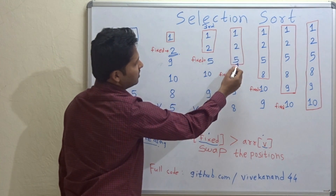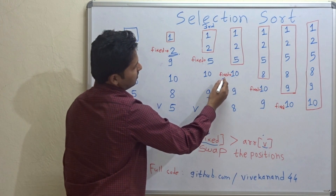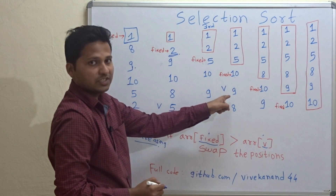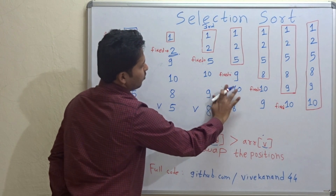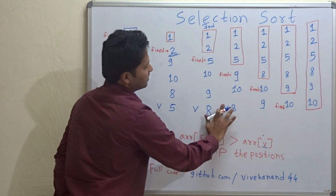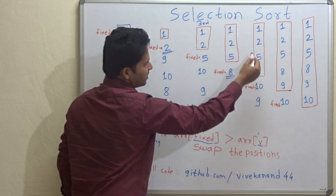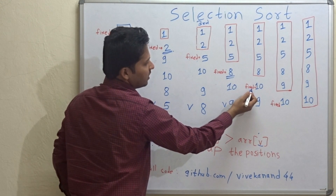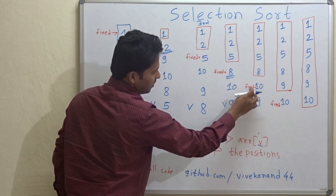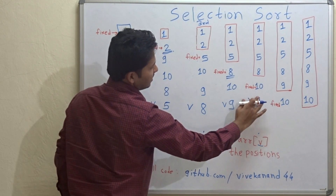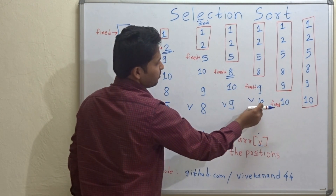In the fourth pass, the first three positions are sorted so the fixed pointer points to the fourth position. 10 is compared with 9 — there is a need of swapping, so 9 and 10 are swapped. The variable pointer is incremented; 9 is compared with 8, and there is a need of swapping — 8 and 9 are swapped. As the first four positions are now sorted, the fixed pointer moves to the next position. Compare 10 with 9: 10 is greater than 9, so we swap. 9 will come here and 10 will come here, and this pass ends.